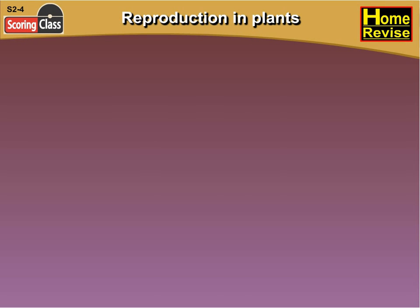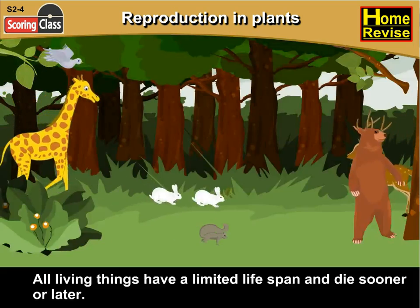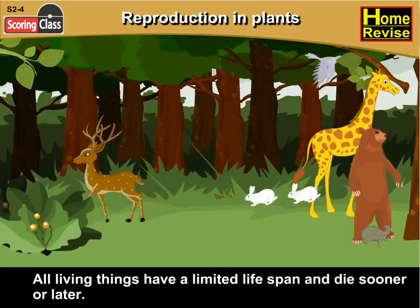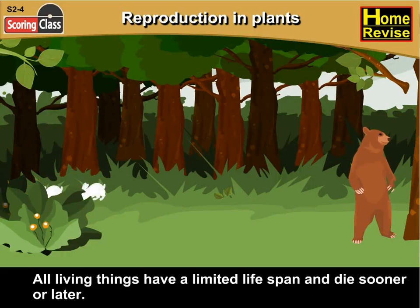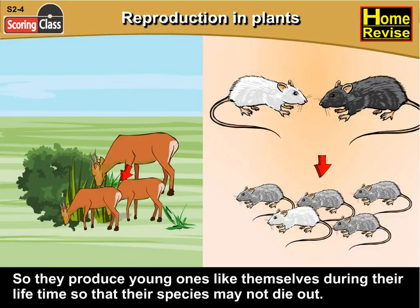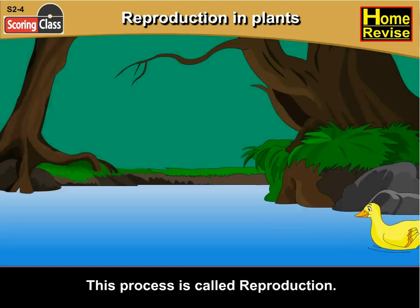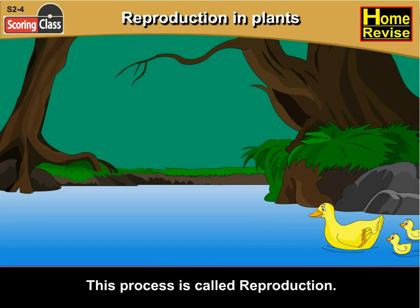Reproduction in plants. All living things have a limited lifespan and die sooner or later. They produce young ones like themselves during their lifetime so that their species may not die out. This process is called reproduction.